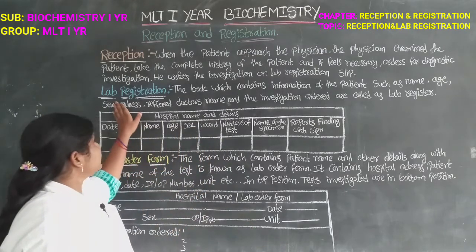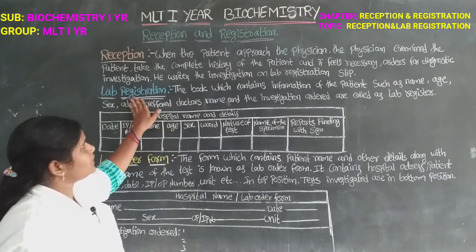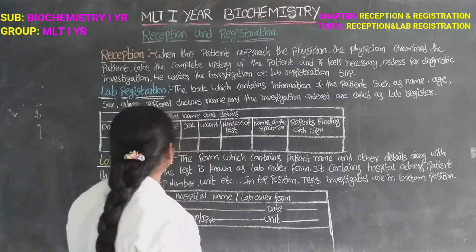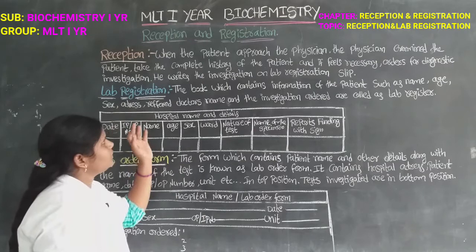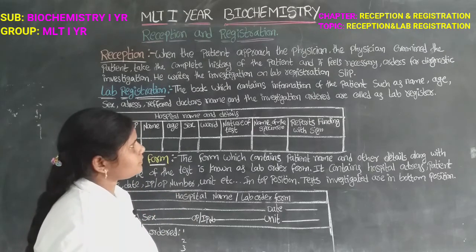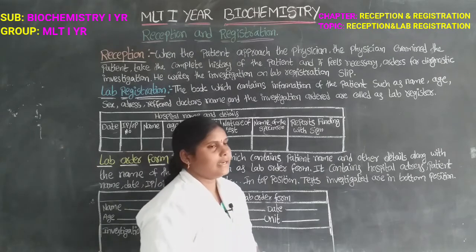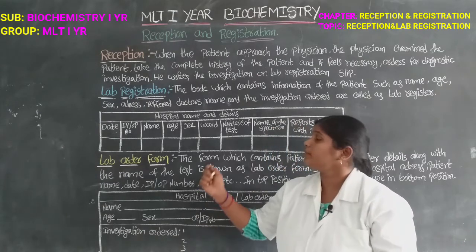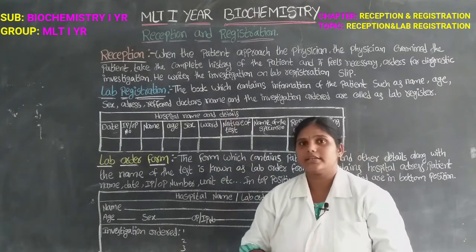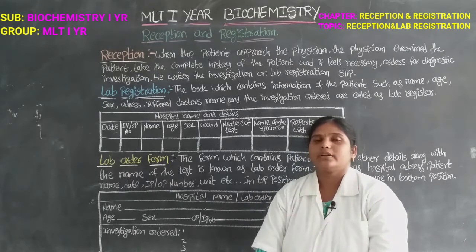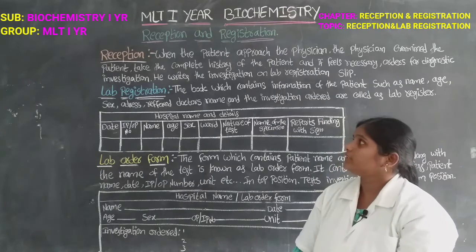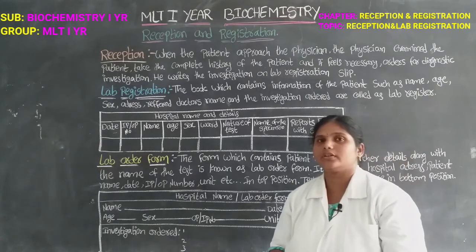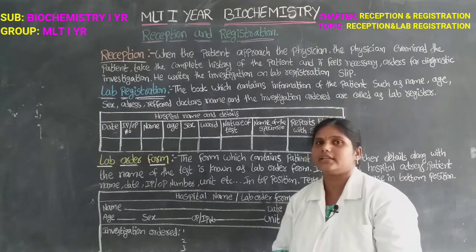Next is the registration — lab registration. The book which contains information of the patient such as name, age, sex, address, and referred doctor name, along with the investigation, is called the lab register. We enter any patient details in this book. This is called lab registration.